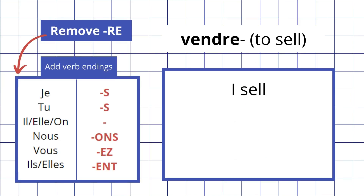Let's take vendre, to sell, as an example. If we want to say I sell, first remove the RE — we're left with vend — then we need to add the correct verb ending. I is je, so the correct verb ending is just adding an S. So I sell: je vends.